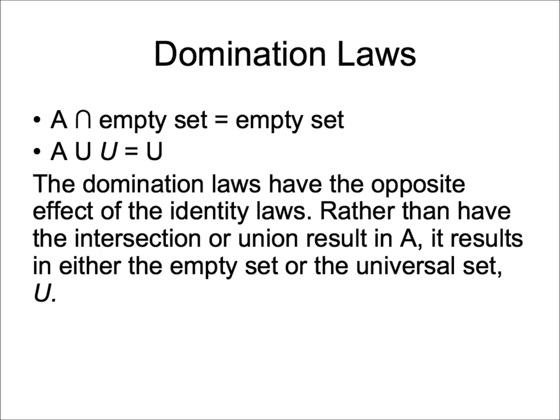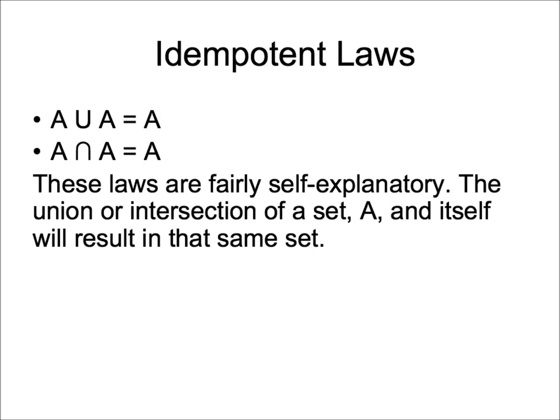The second part states that the union of set A and the universal set results in the universal set. Next, we have the idempotent laws. They basically state that the union or the intersection of a set A and itself will result in the same set.